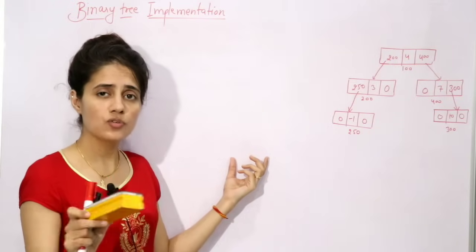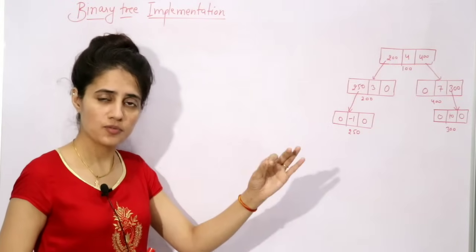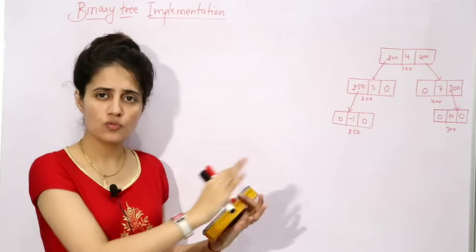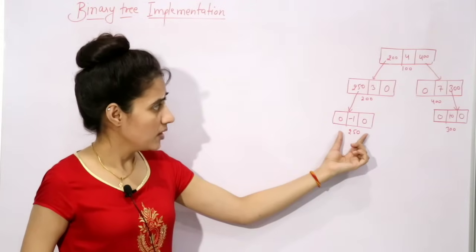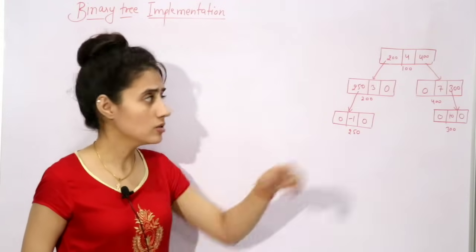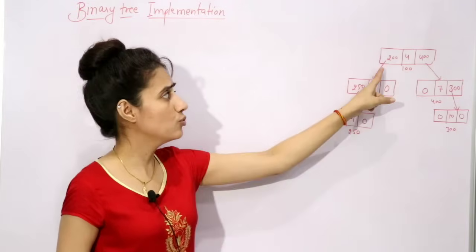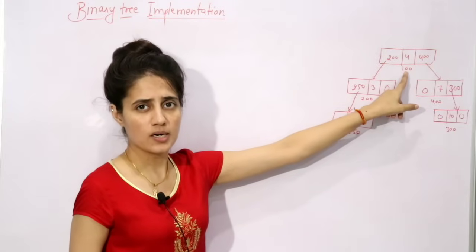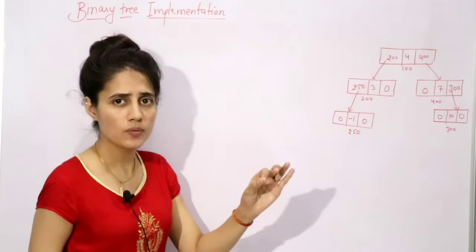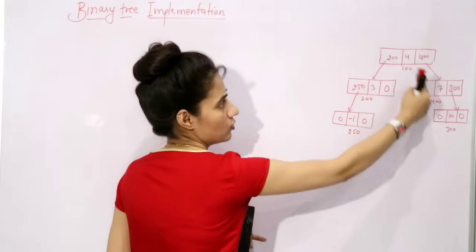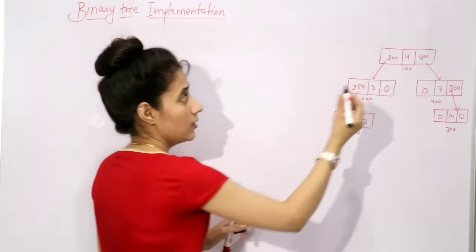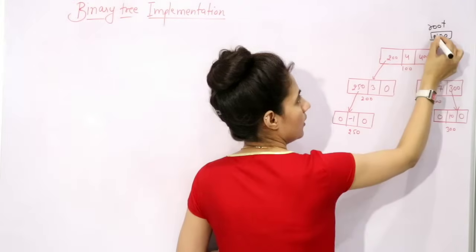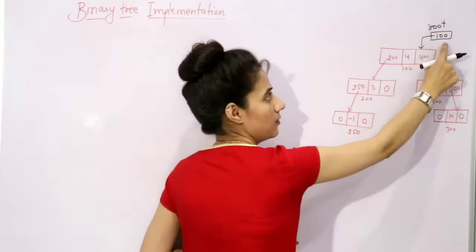In a linked list, we always maintain a head pointer. If you have the head pointer, you can easily traverse all the nodes of the linked list. Similarly, in a tree, we will have a root pointer — a pointer to the root node. Here, this root pointer will contain the address of the root node, which is 100. If you have the address of the root node, you can easily traverse all the nodes from the root node. So we maintain just this root pointer.